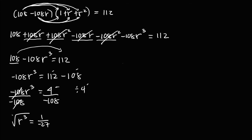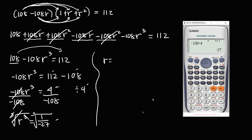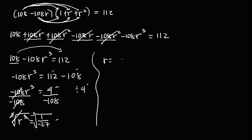To solve for r, we take the cube root of both sides. Therefore r is equal to the cube root of 1 over negative 27, which is negative 1 over 3. So the common ratio r equals negative 1/3.